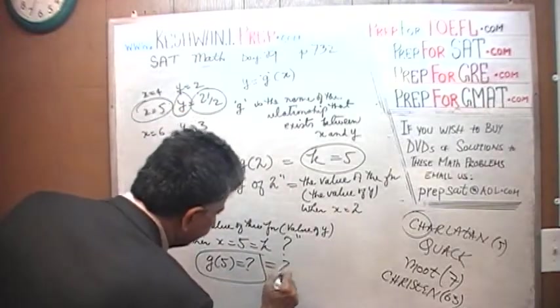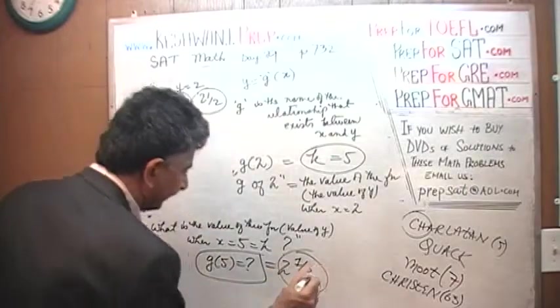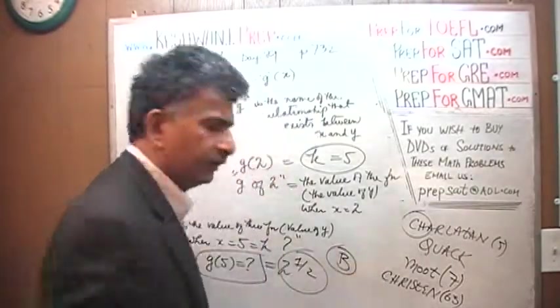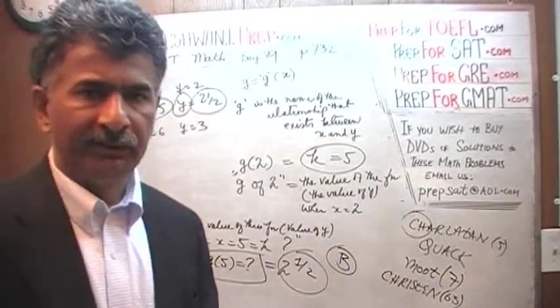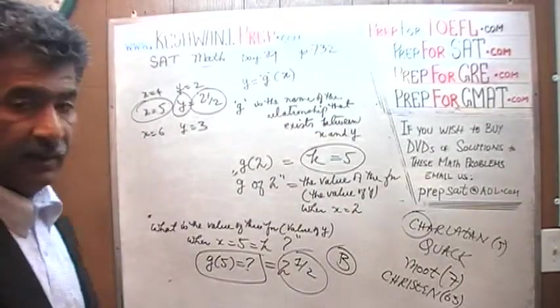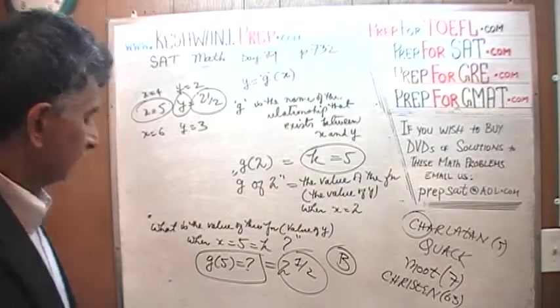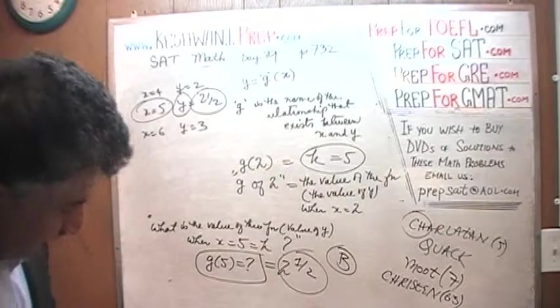There you go. So that's it, and the answer is B. The value of the function when X is equal to 5 is 2 and a half, or value of the Y is 2 and a half. That's all. We are done. Let's do the next one. Number 14.